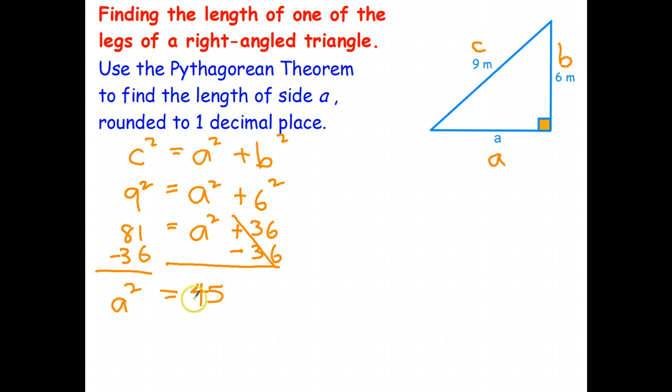Quick check. 30 plus 40 is 70. 6 plus 5 is 11. Yep, 70 plus 11 is 81. Okay, as before, take the square root of each side to cancel out the squaring. And there's the exact answer. A is equal to the square root of 45.